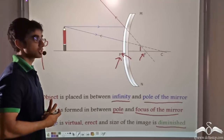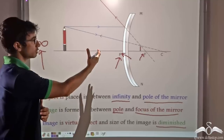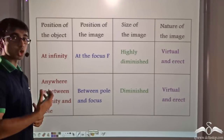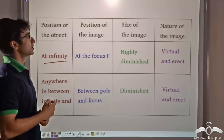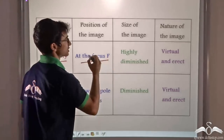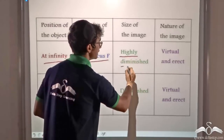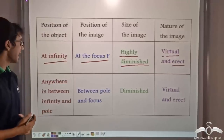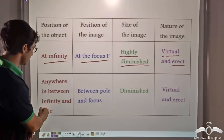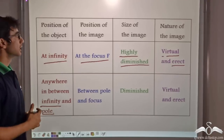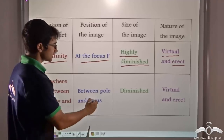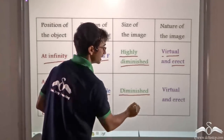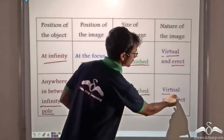Let us take a quick recap of what happens when we place an object in front of a convex mirror. When the object is placed at infinity, the image is formed at the focus; the size is highly diminished and the image is virtual and erect. When the object is placed anywhere between infinity and the pole of the convex mirror, the image is always between the pole and the focus; the size is diminished and the image is virtual and erect.